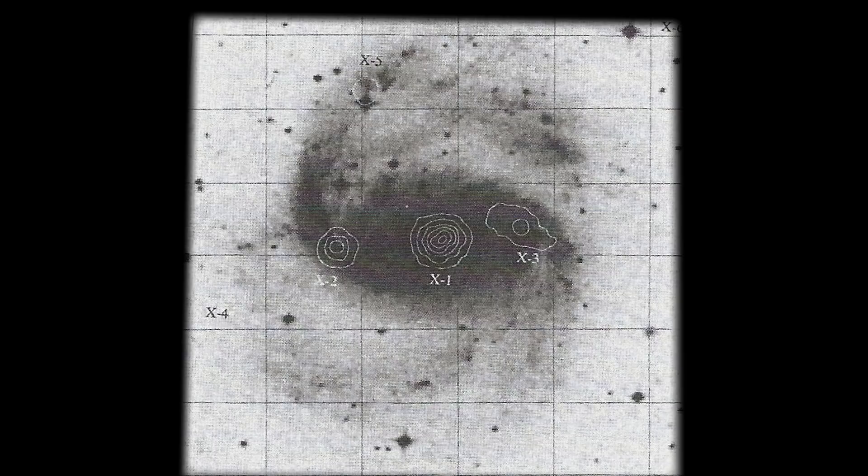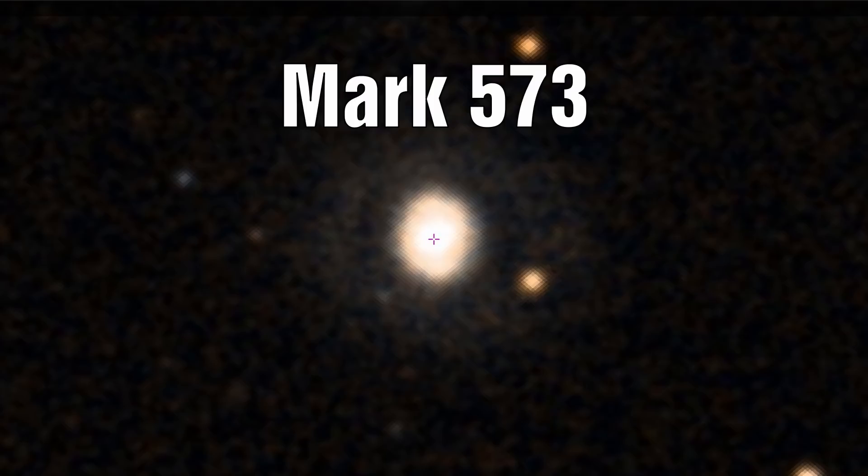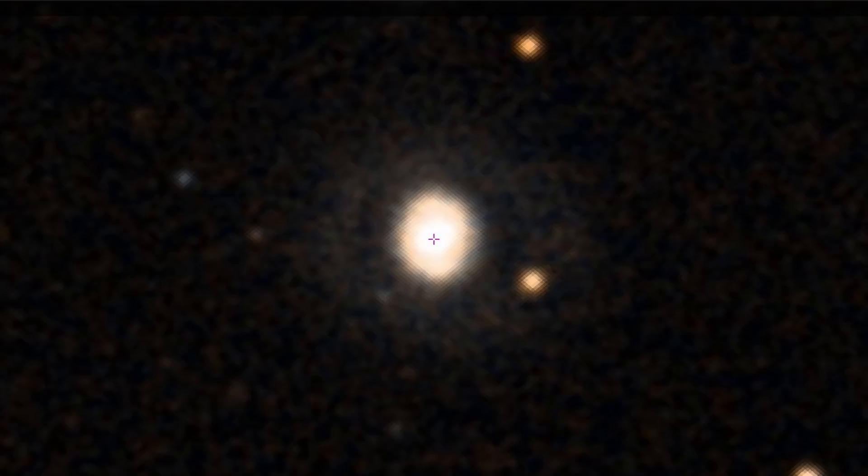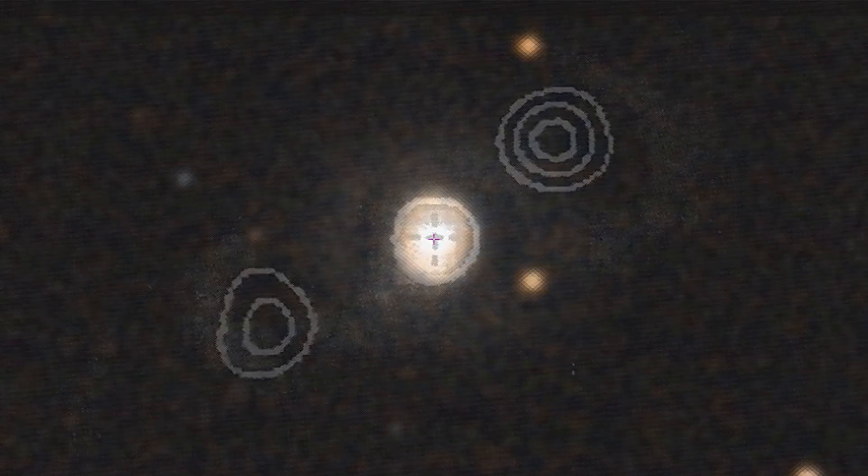Another possible example of this is Mark 573 which shows a pair of radio sources ejected in the plane opposite the nucleus. Hydrogen alpha gas seems to be forming bow shocks around these ejected sources.